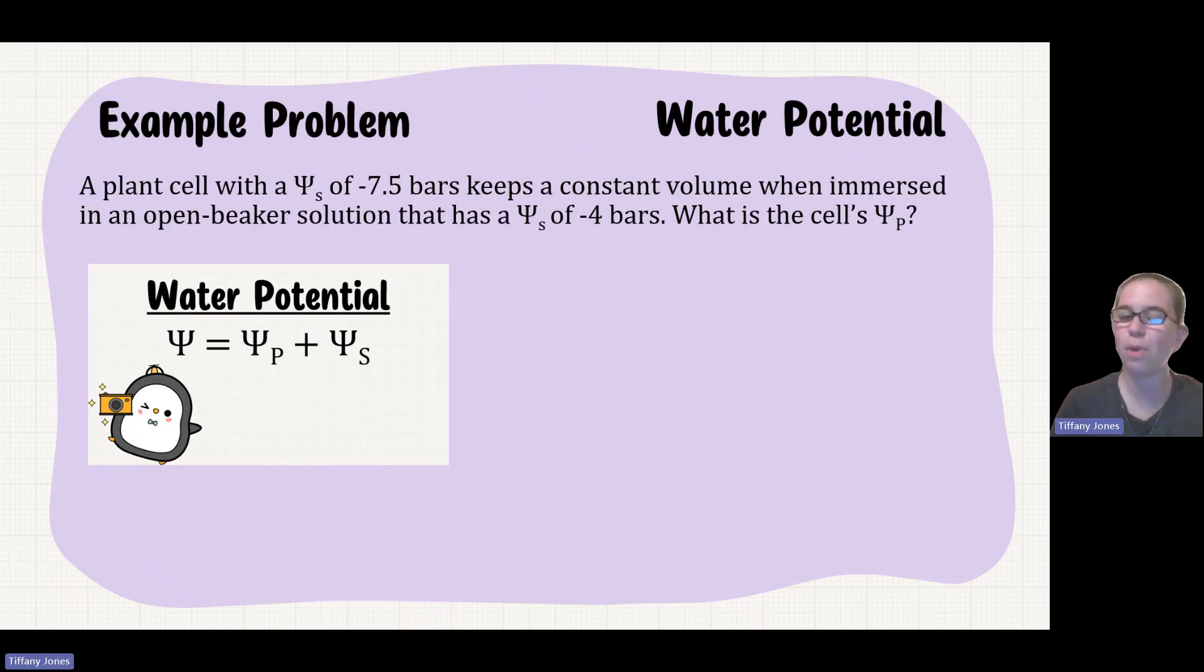Pause the video and see if you can solve this problem. And yes, I did make it a little bit harder. A plant cell with a solute potential of negative 7.5 bars keeps a constant volume when immersed in an open beaker solution that has a solute potential of negative 4 bars. What is the cell's pressure potential?